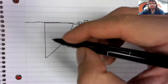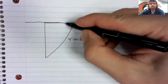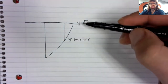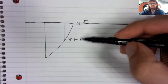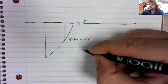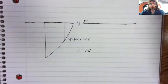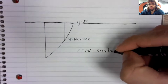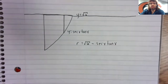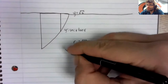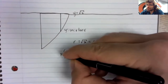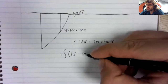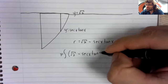The radius is the distance from the axis of rotation to the curve, and the distance is just the bigger minus the smaller. The bigger is the square root of two, and the smaller is the secant times the tangent.